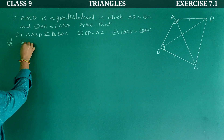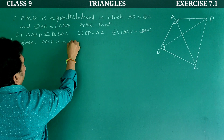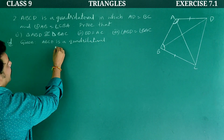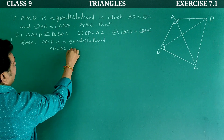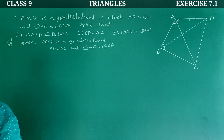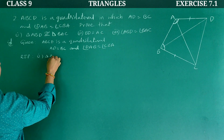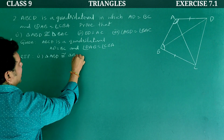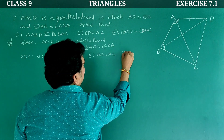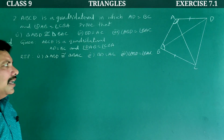Solution. Given: ABCD is a quadrilateral. In this quadrilateral, AD is equal to BC, and angle DAB is equal to angle CBA — as given. Required to prove: first, triangle ABD is congruent to triangle BAC; second, BD is equal to AC; third, angle ABD is equal to angle BAC.